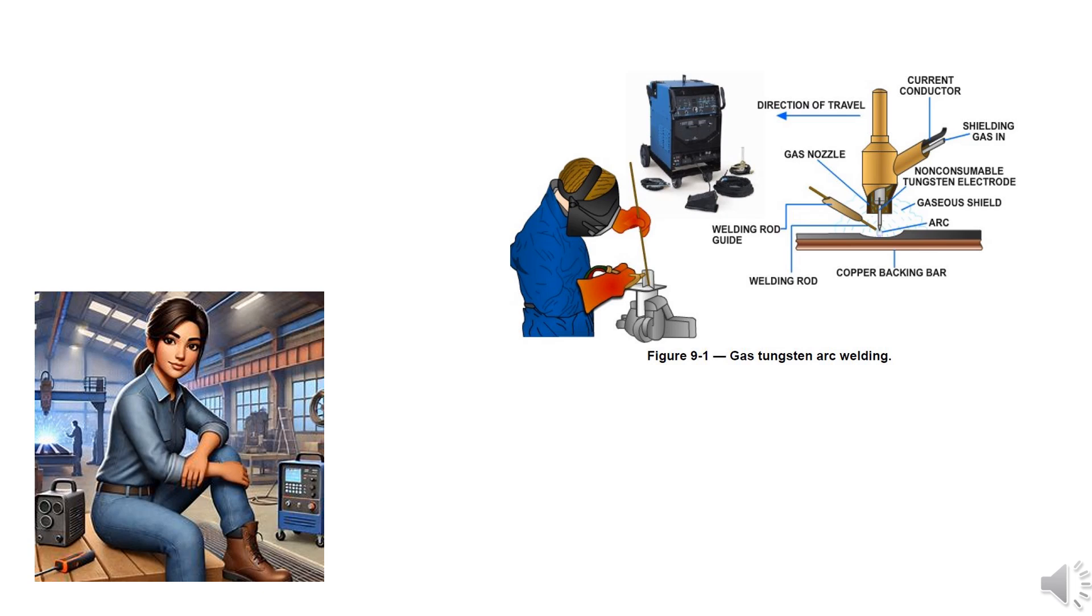This overview explains the fundamentals of the GTAW process, equipment requirements, and critical variables that influence weld quality. Topics include equipment setup, material preparation, positioning, arc starting, welding of pipes and plates, weld repair, and safety precautions. Additionally, this guide highlights the importance of adhering to welding safety measures. For precise operational and maintenance details, refer to manufacturer's manuals.